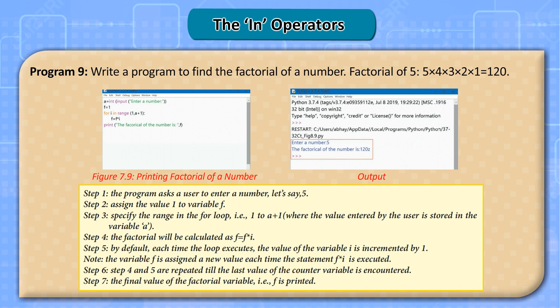Program 9: write a program to find the factorial of a number. Factorial of 5: 5 × 4 × 3 × 2 × 1 equals 120. Step 1: the program asks the user to enter a number, let's say 5. Step 2: assign the value 1 to variable f. Step 3: specify the range in the for loop, 1 to a plus 1, where the value entered by the user is stored in variable a. Step 4: the factorial is calculated as f equals f times i. Step 5: by default, each time the loop executes the value of i is incremented by 1. Note: variable f is assigned a new value each time. Step 6: steps 4 and 5 are repeated till the last counter value. Step 7: the final value of factorial variable f is printed.